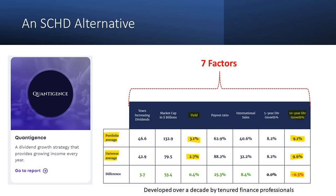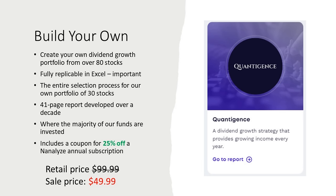Remember our rule of 72? At 9%, or our universe average of 9.6%, your income doubles in just 7.5 years — that's what we're talking about when we say not having our income eroded. If you want to build your own dividend growth portfolio instead of investing in an ETF, and you have the time, energy, and willingness to learn, it's actually quite simple. You can choose from the universe of 80 stocks in this report — it's fully replicable in Excel. Getting the data and cleaning it is the harder part, and that's the value we add. The entire selection process for our portfolio is detailed in this 41-page report that we spent over a decade developing, and it's where the majority of our money is currently invested.